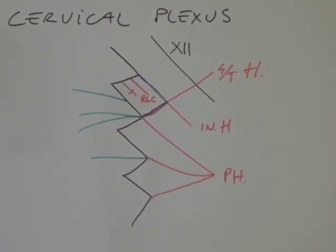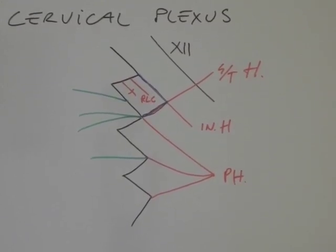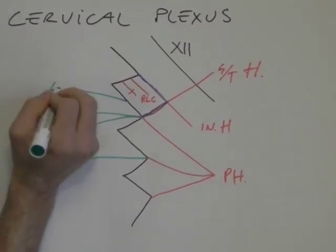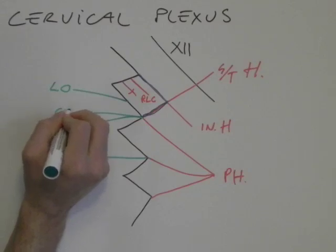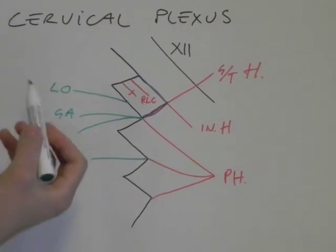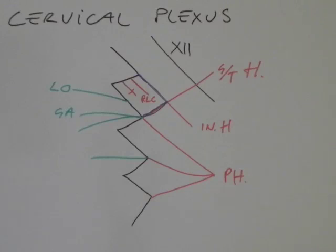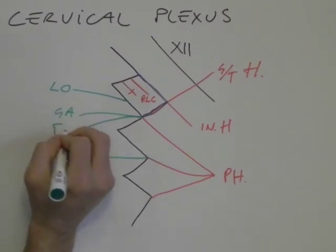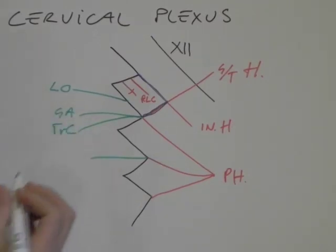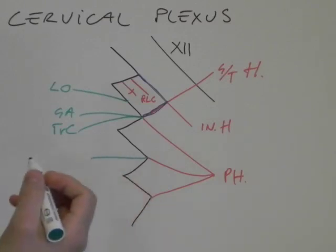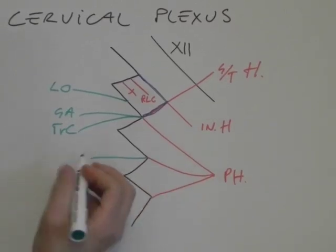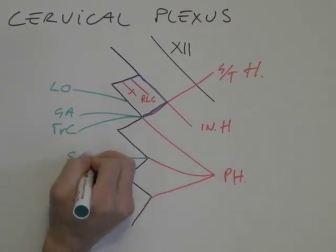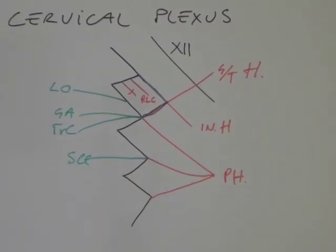For the posterior branches, instead, we have the first one, is LOGA. So LOGA, and there is the lesser occipital and greater auricular nerve. Then we have TRC, that is transverse cervical nerves. And then we have SCL, that would be supraclavicular nerves.